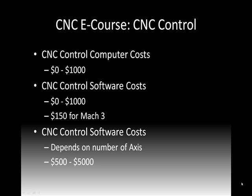I thought I'd briefly go over some costs so you have an idea if you're going to put one of these together. For the control computer, I'd rather be on the zero-dollar end versus the $1,000 end. Some people spend extra money for the fastest thing possible, but it's not needed — the vast majority of the time you can buy a computer secondhand at a garage sale and it'll work great. For the control software, like any software there's a free option and a high-end option. I got my Mach 3 license for around $150, and I think I bought it in a combo package with SheetCam.